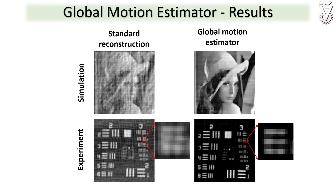In this slide, you can see some results from our global motion estimator. In the first row, we present a simulation of how motion affects reconstruction of a complex scene, and how our algorithm improves the quality of the reconstruction. In the second row, you can see an experimental result of a resolution target which was moved during imaging, and you can see how our reconstruction algorithm both improves the final quality and the resolution of the image.